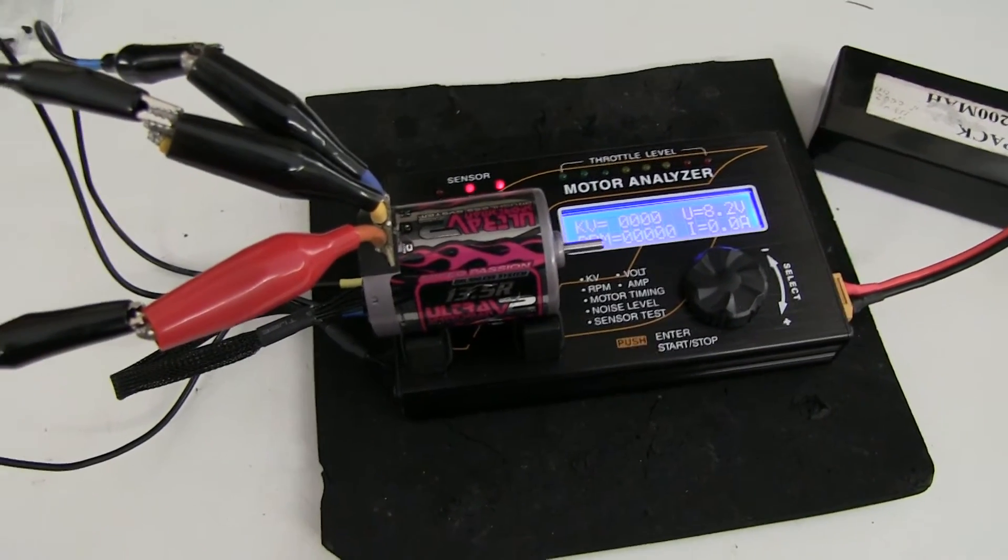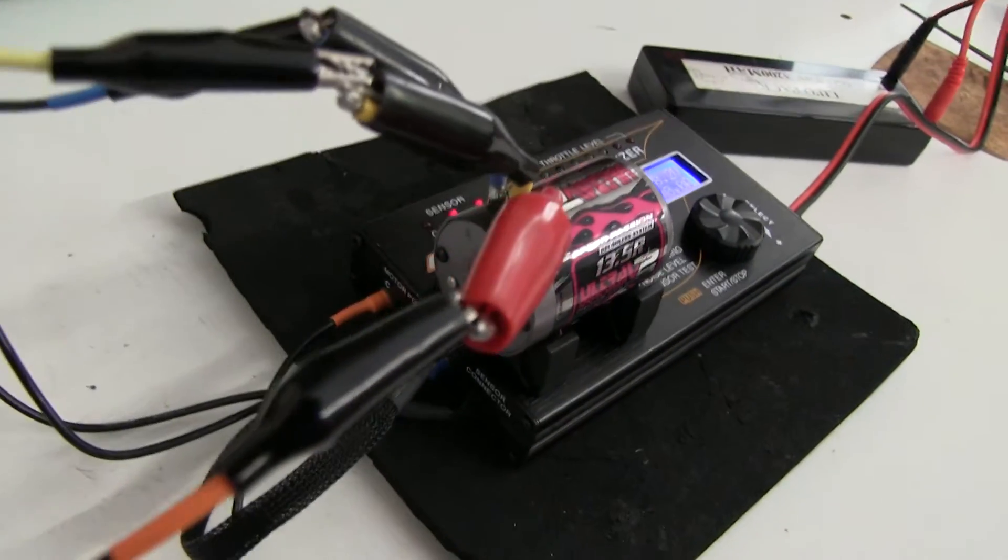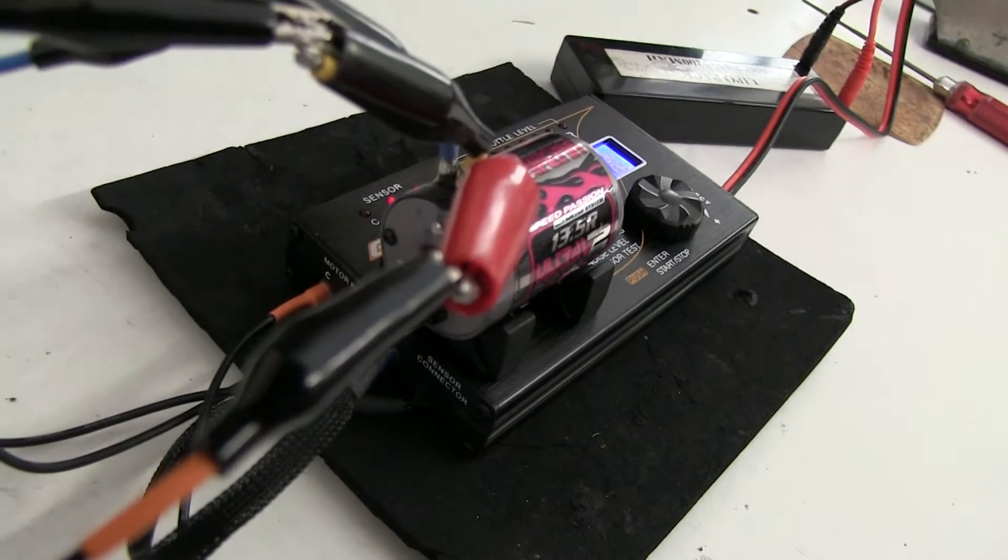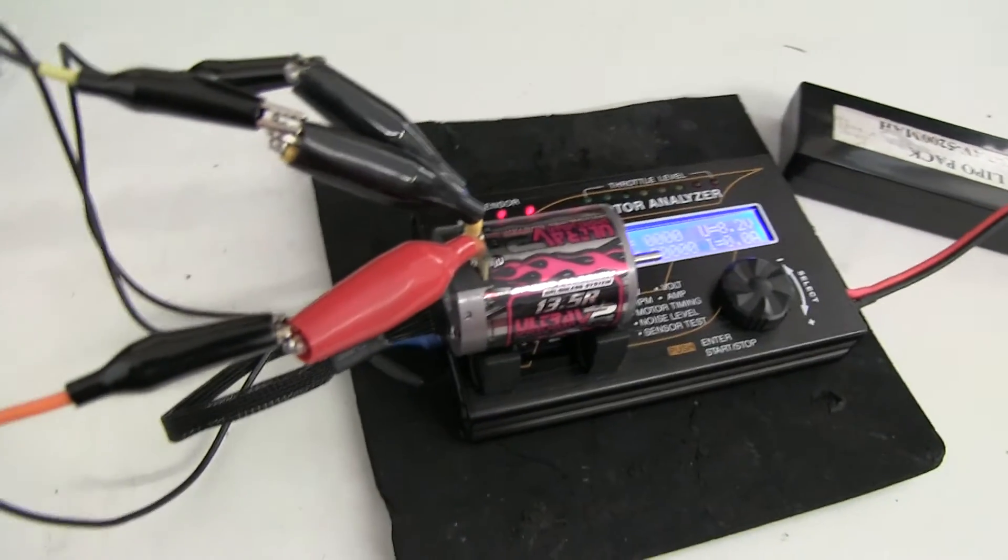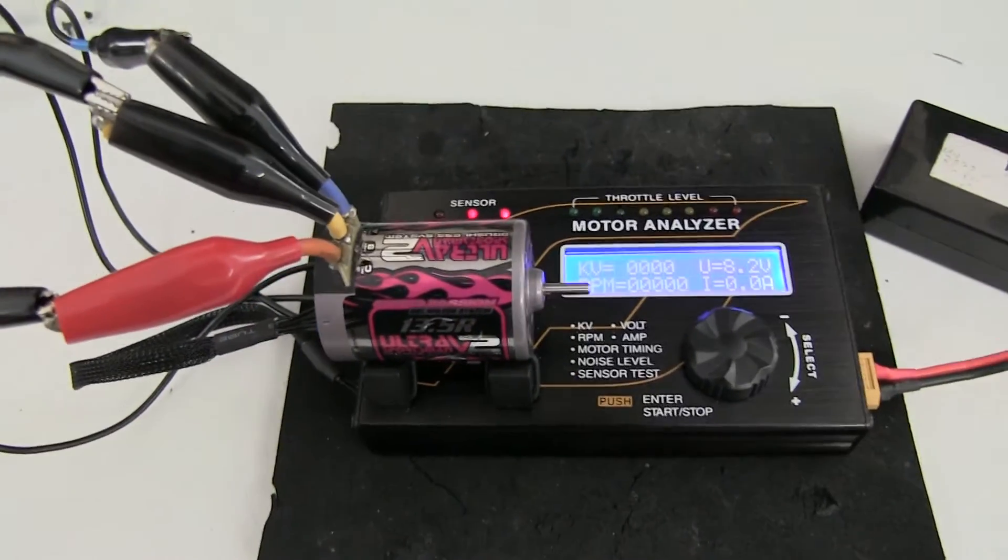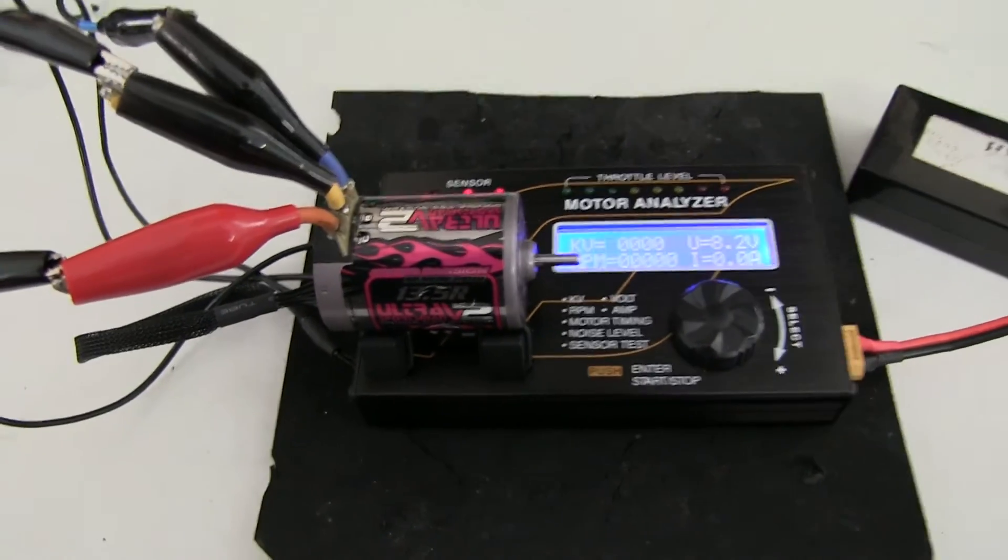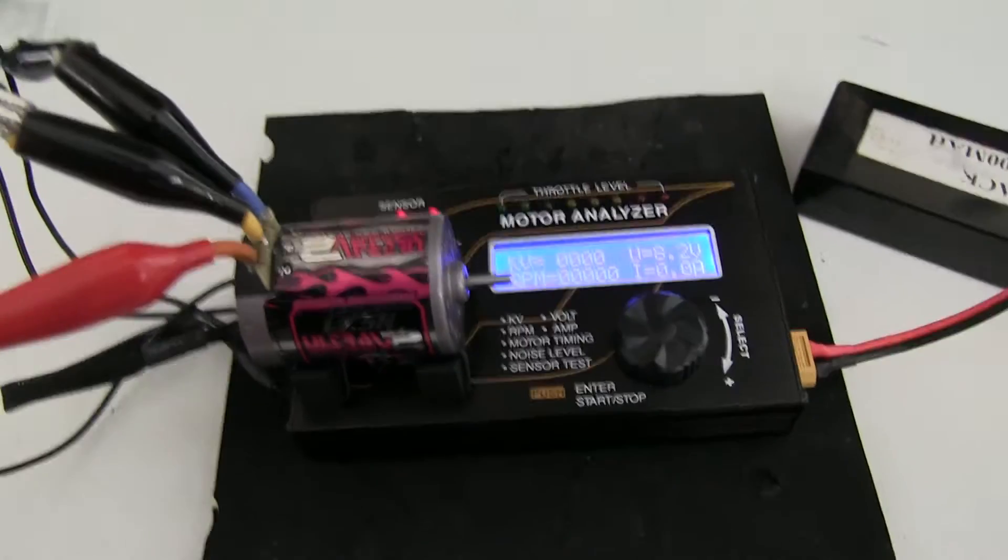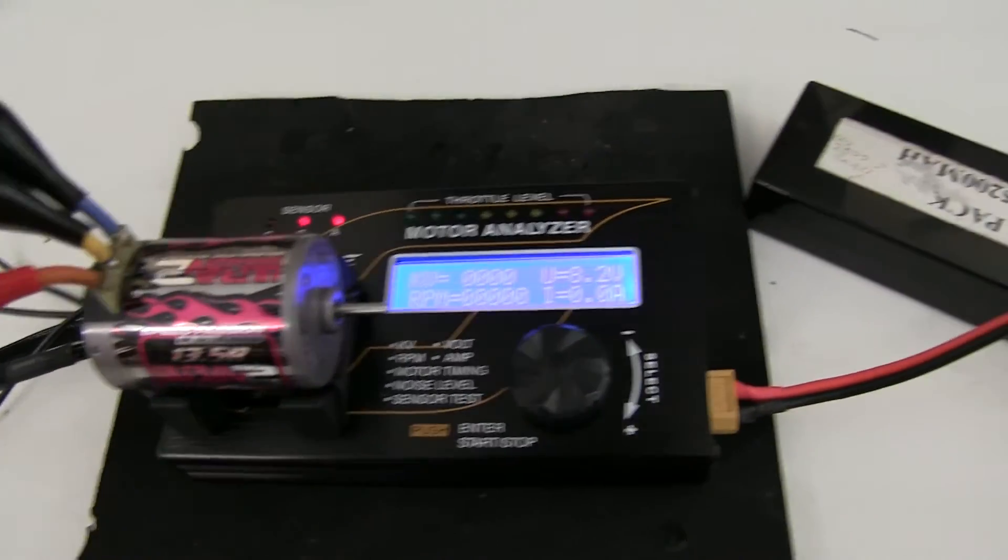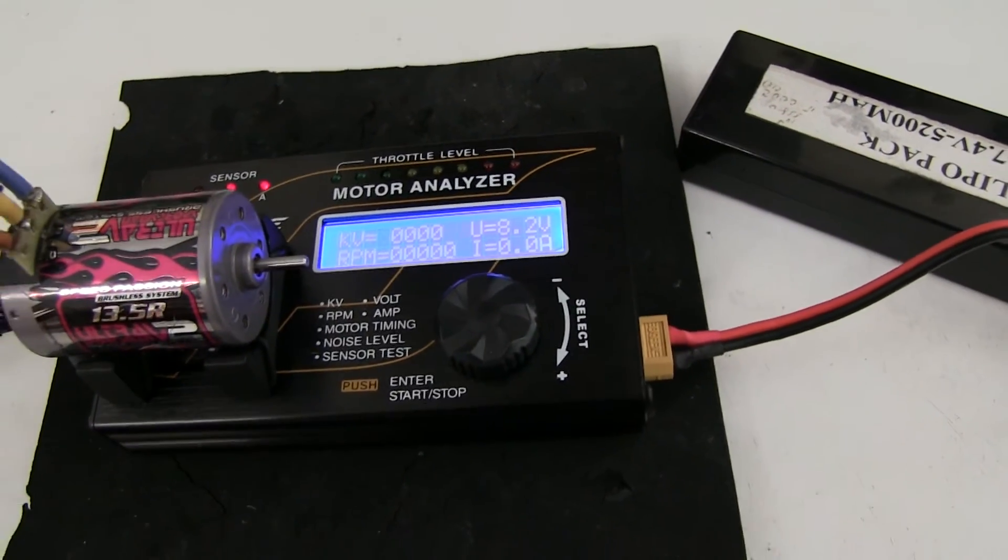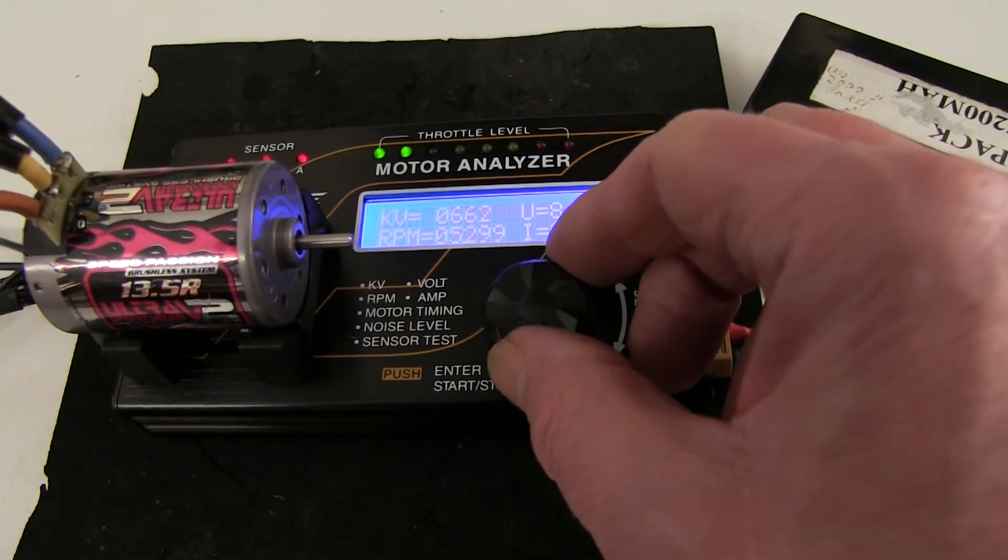Here's another 13.5 turn. This is a Hobbywing Ultra Sportsman. It's the one that has a fixed endbell, you can't even take it apart. No adjustable timing. It's a cheap motor. In fact, it's the one I use on my dyno rig to test speed controls, as it's not a heavy current draw. And, if there's anything wrong with the speed controller, it's unlikely to burn either of them out. Anyway, I've put it on the rig, we'll see how it compares to the others.